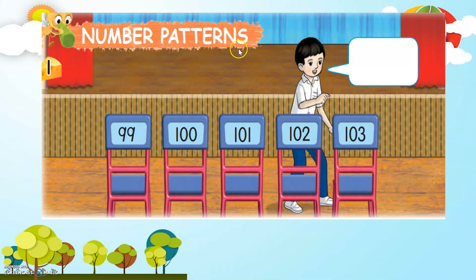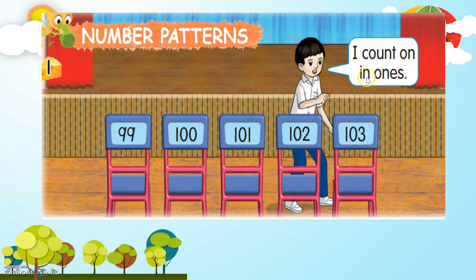Number patterns. If we look at the chairs here, there are 5 chairs and each chair has a number. This one is 99, 100, 101, 102, 103. That means all the numbers are arranged in ascending order, from the smaller to the larger number. I count on in ones — that means each number is increasing by one.